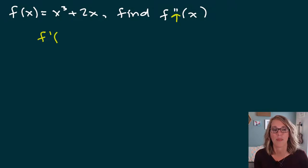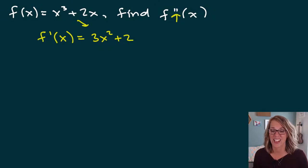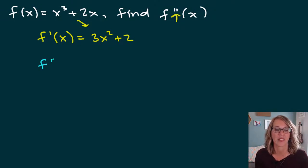So f prime of x, finding that first derivative using the power rule, is equal to 3x squared plus 2. Now if I want to find the derivative again, I can go ahead and move on and find that second derivative.